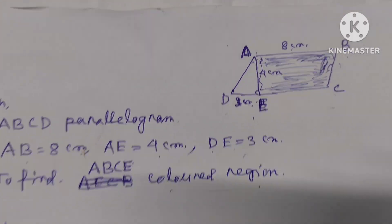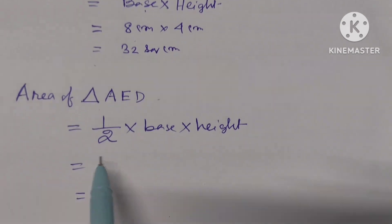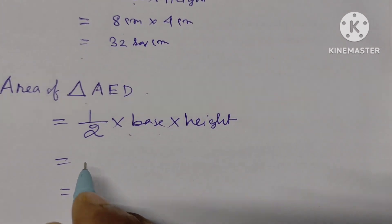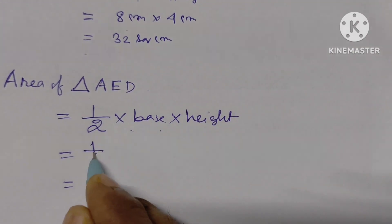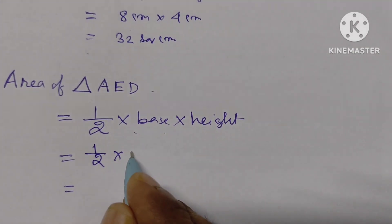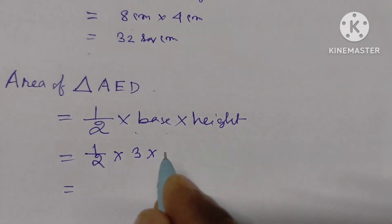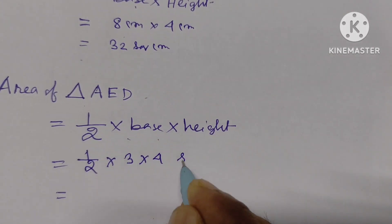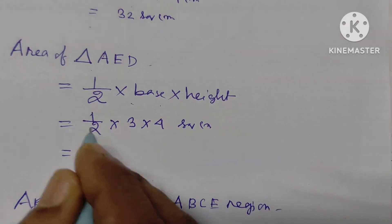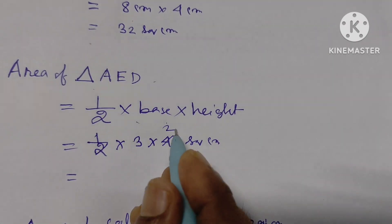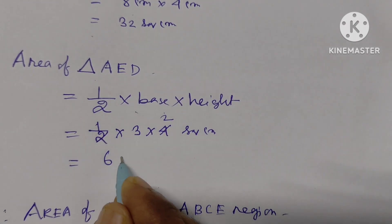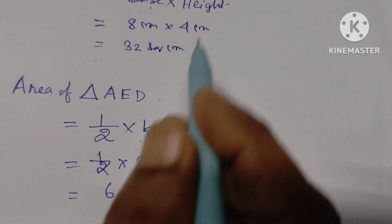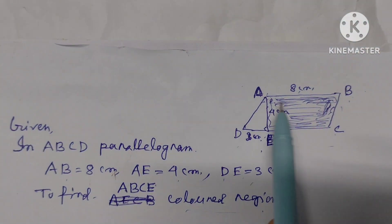Now we have to find the area of triangle AED. The formula for the area of a triangle is half into base into height. Here, half into base into height: height is 4 centimeters and base is 3 centimeters. So area = ½ × 4 × 3 = 6 square centimeters.